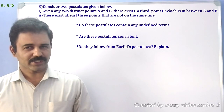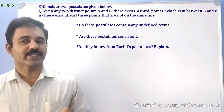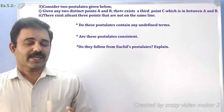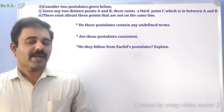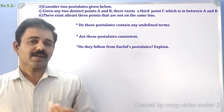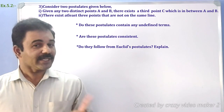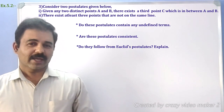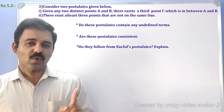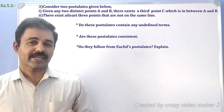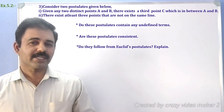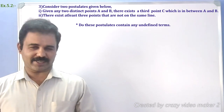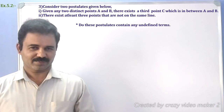Did you understand the question? See here — two statements are given. First: there are two points A and B, and a third point C lies between A and B. Second: there are two points A and B, and there exists another point C that does not lie on the same line.